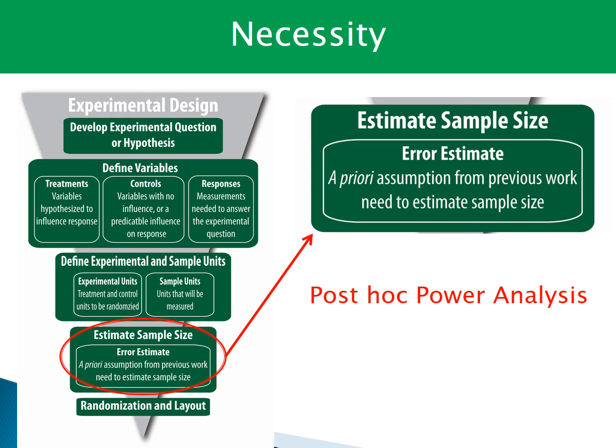You can see several experimental design steps here. There is an important step in this picture: estimating sample size. A priori assumptions from previous work are needed to estimate sample size — you can call this process post-hoc power analysis. This step is necessary because if you skip it and get unsatisfying statistical power, you cannot turn it back.